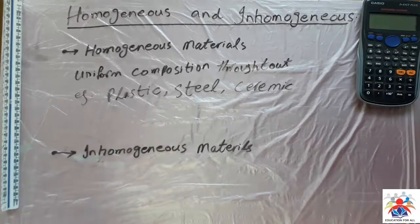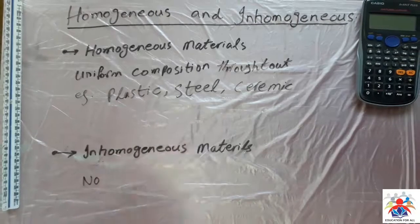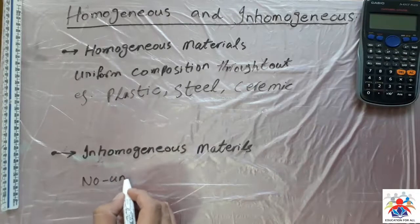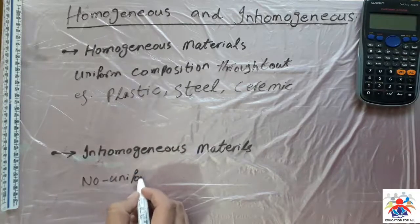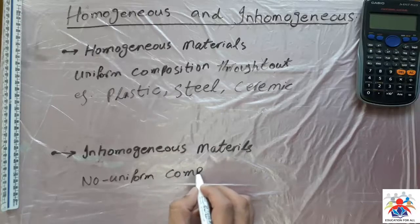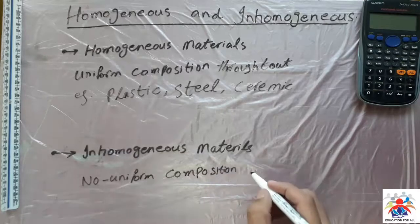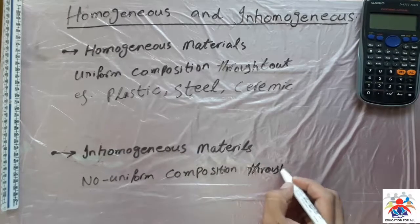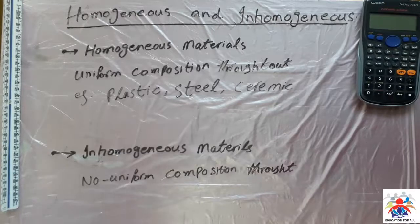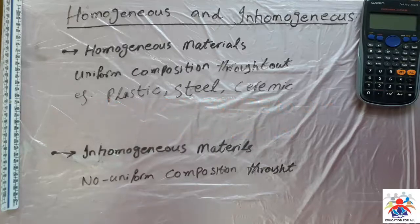Now let's move on to inhomogeneous. Inhomogeneous means it's opposite to homogeneous — non-uniform composition throughout. It means that any material which is made out of different things is non-homogeneous; all the materials are different in it.